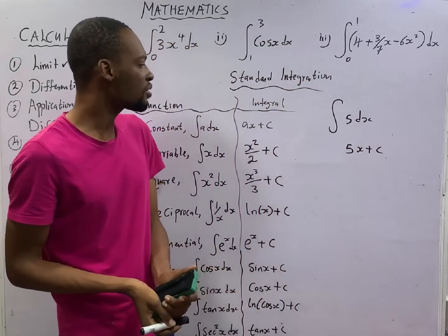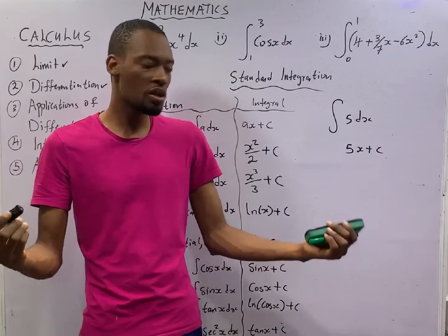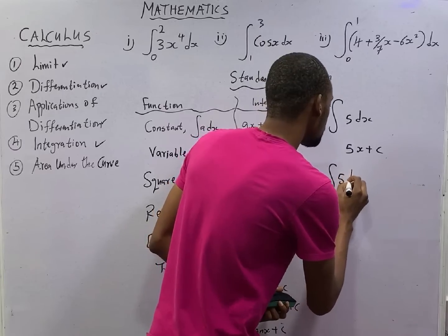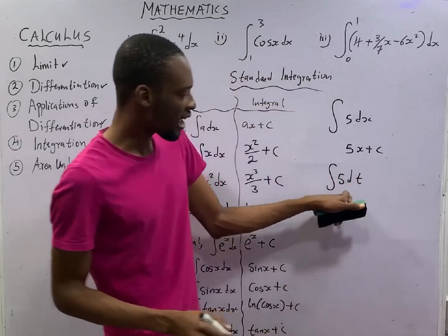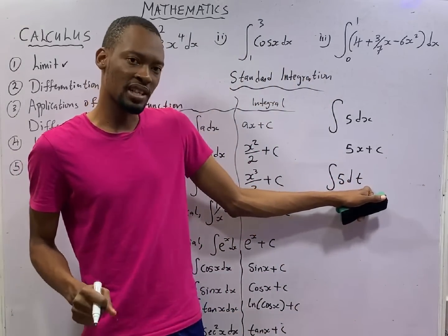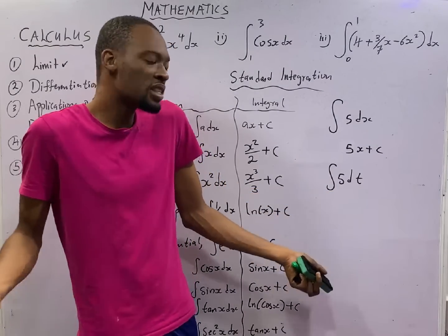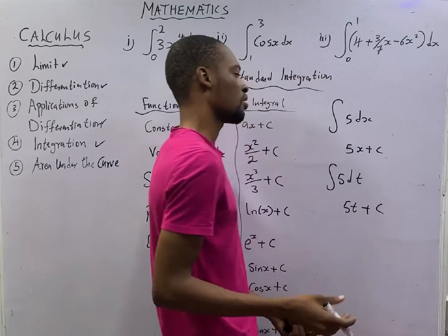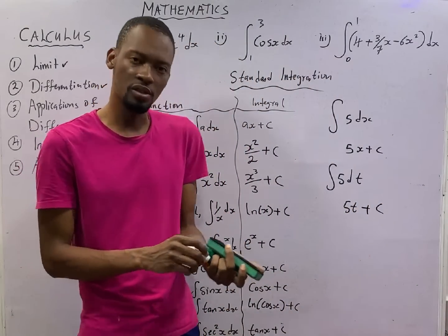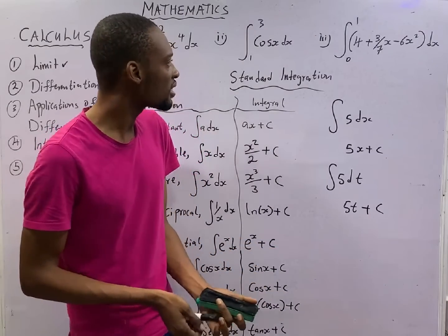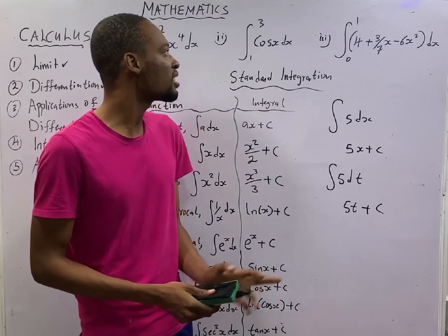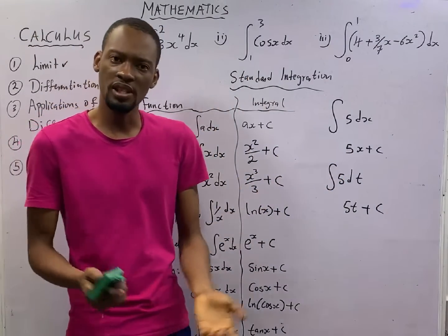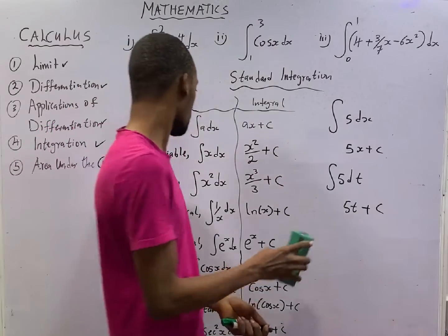Sometimes, integration or differentiation, they are not always functions of s. You can get something like this: integrate 5 dt. You know that we are not talking about s. The function is t. It is basically the same thing. You will get 5t plus c. That is it. It is the same procedure. It is not always s you get. Sometimes you will be told, integrate cos t, cos y, cos theta, cos m, and so on. So long it is a variable, you apply this law.